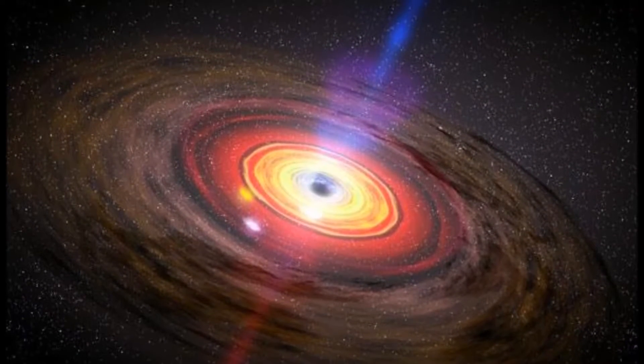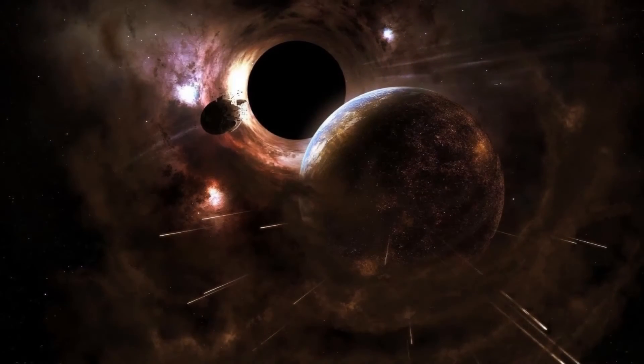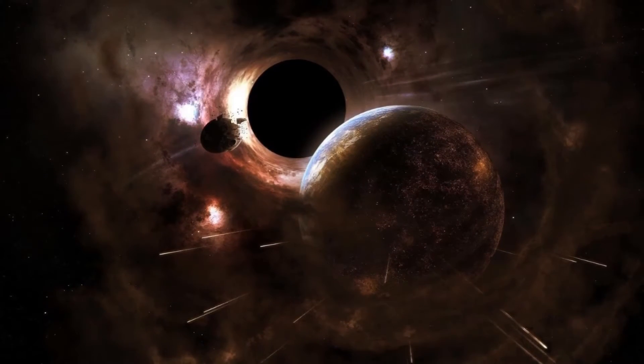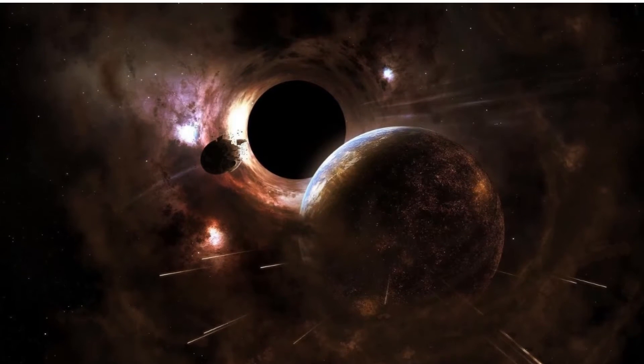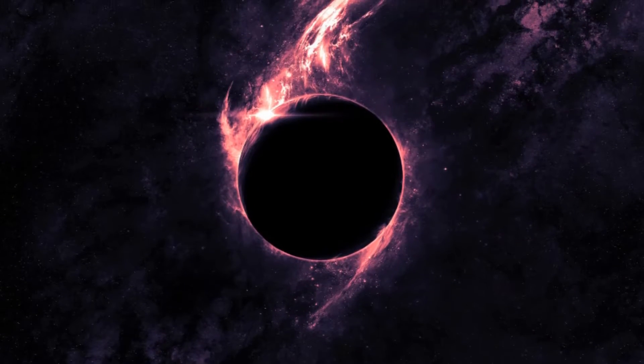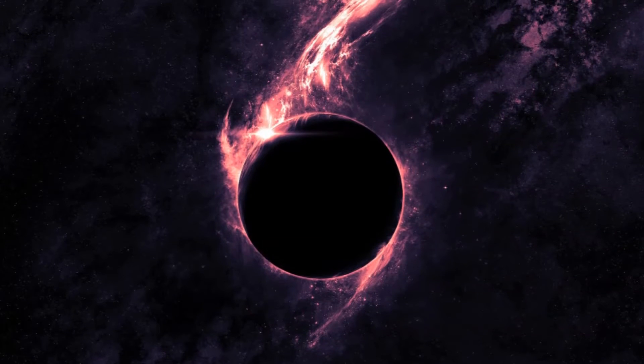Nearly all black holes come in one of two sizes: stellar-mass black holes that weigh up to a few dozen times the mass of our Sun, or supermassive black holes ranging from a million to several billion times the Sun's mass.